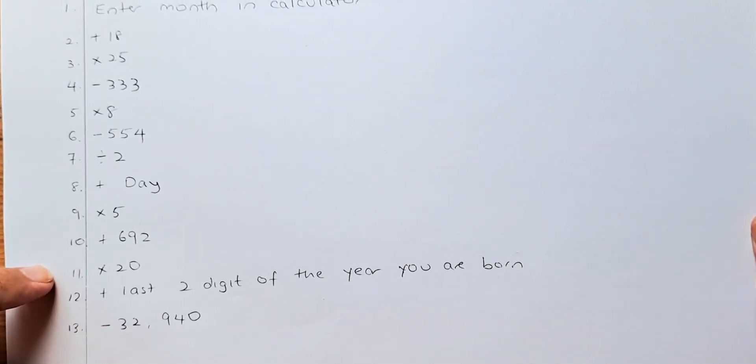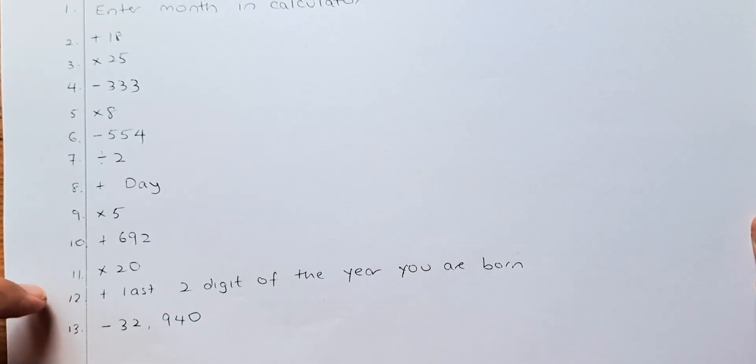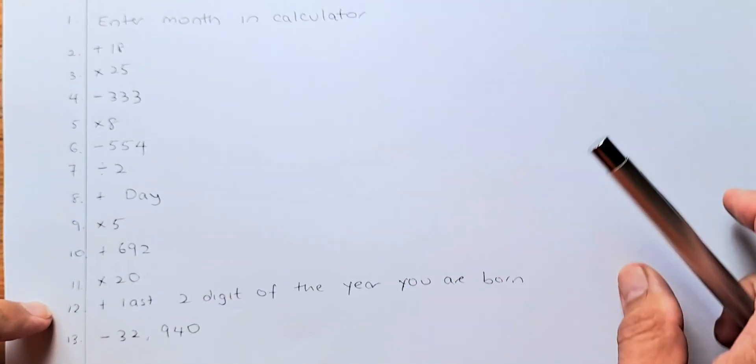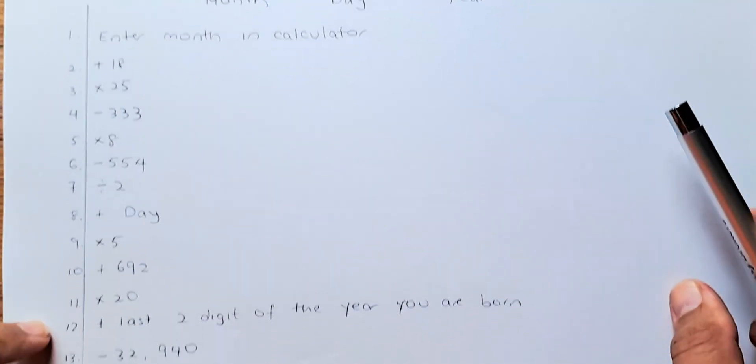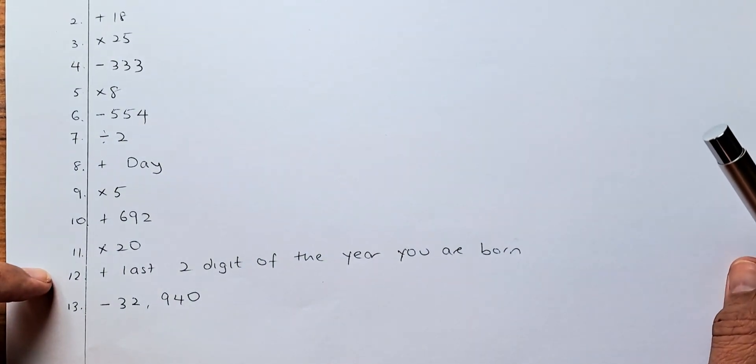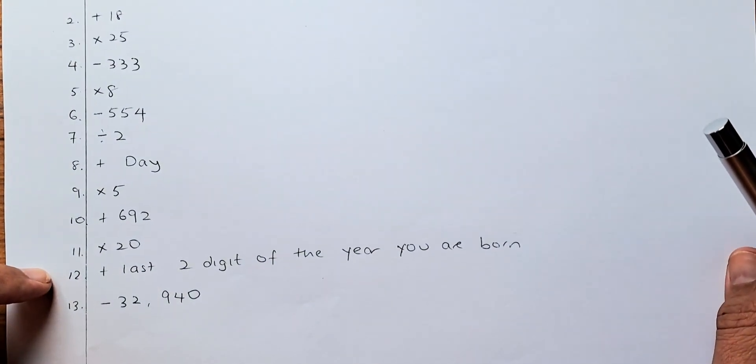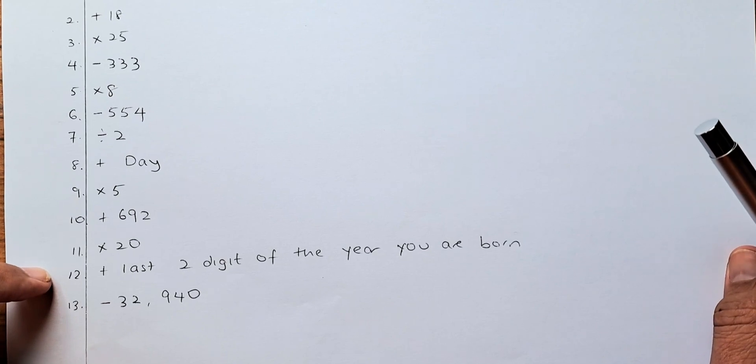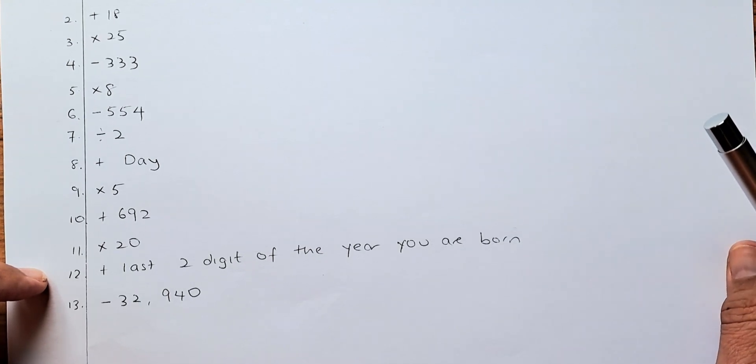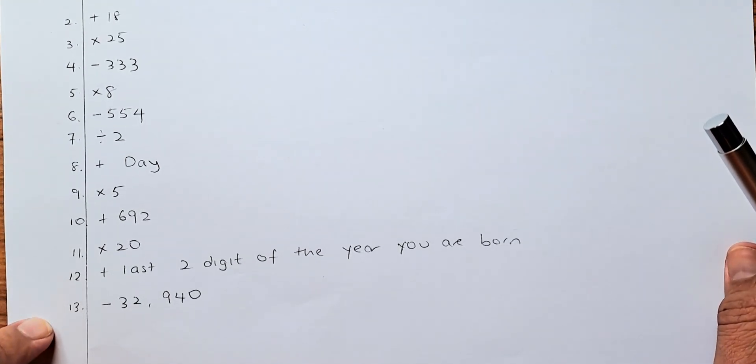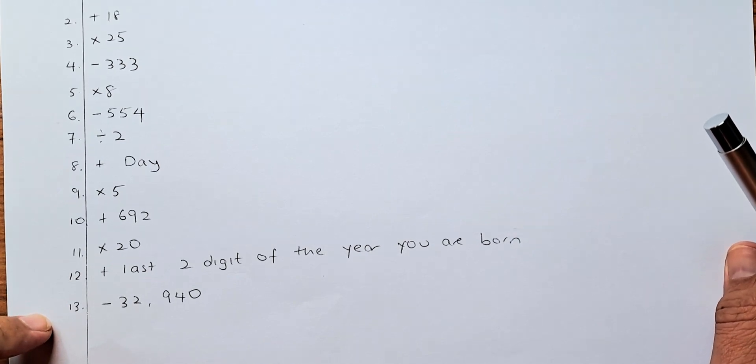We are now in step 11. And the last two steps is the key. You're going to add the last digit of the year you are born. The year you are born. If you are born in 1968, you're going to add 68. If you are born in the year 2002, you're just going to add 2. And last but not least, you are going to minus a big number here, 32,940.